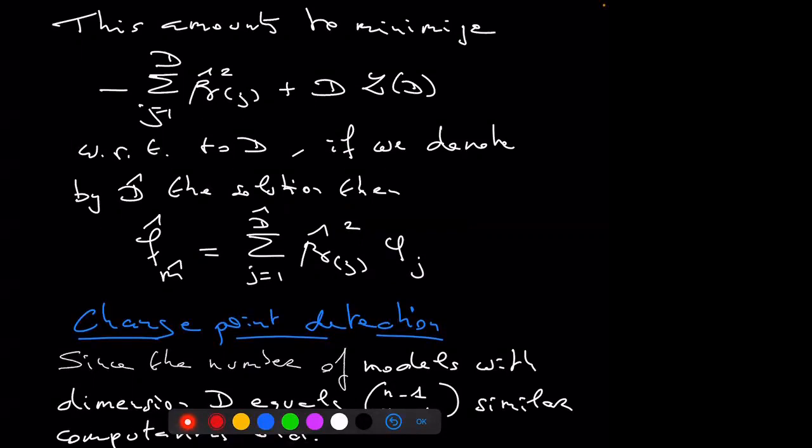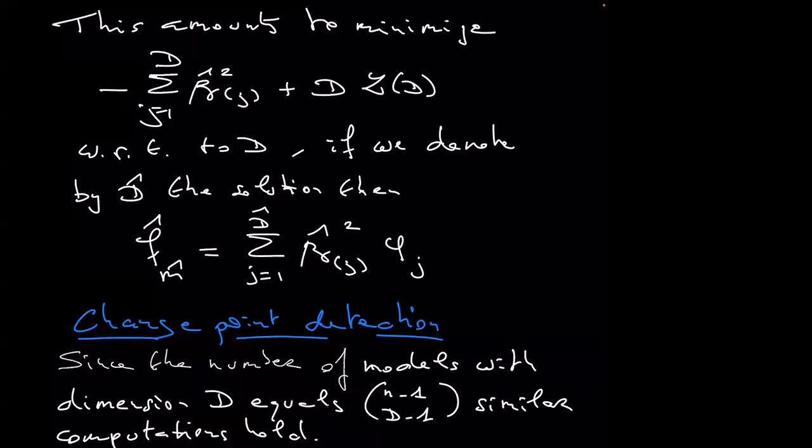At the end this leads to an optimization over a set of integers, so you can put it in a machine. You get something which is not as explicit as the hard thresholding estimator, but it is still computable. For change point detection it is exactly the same combinatorial consideration.